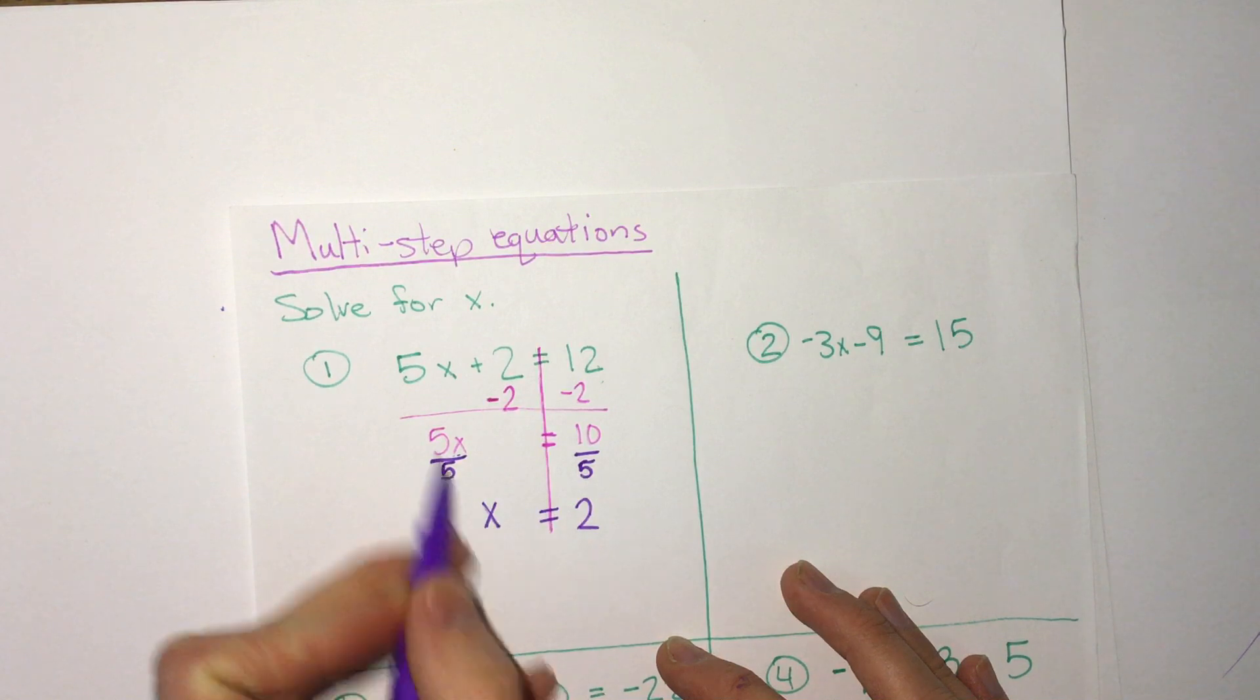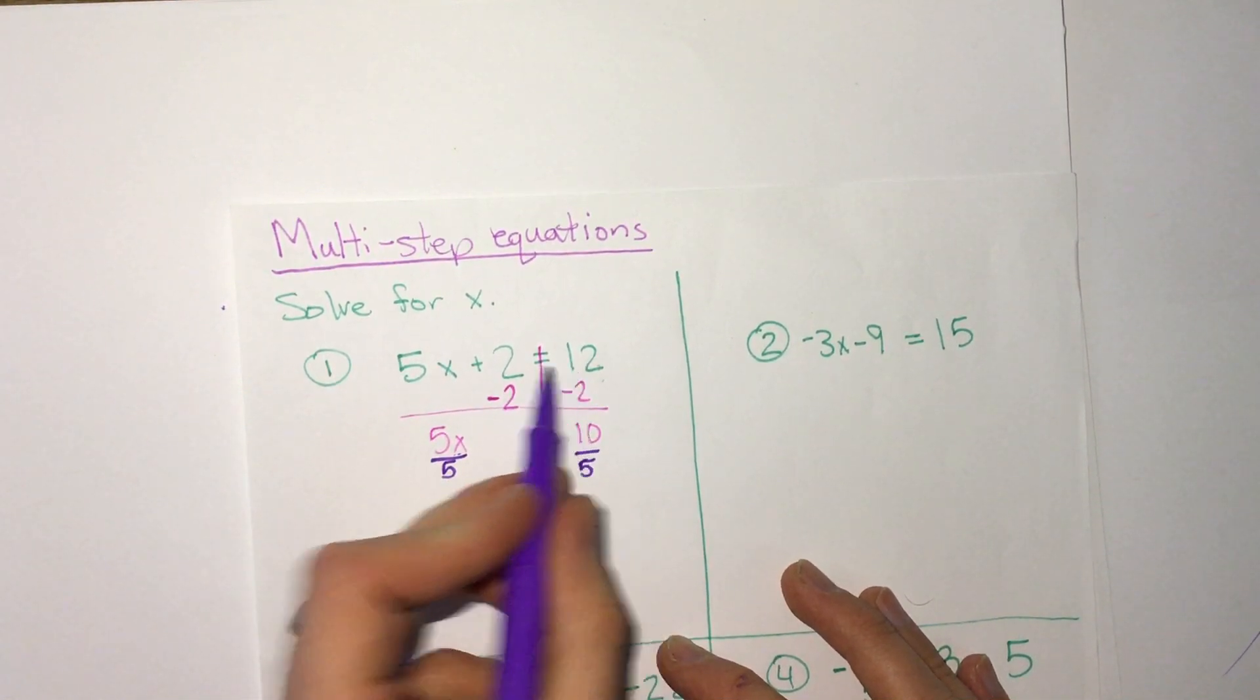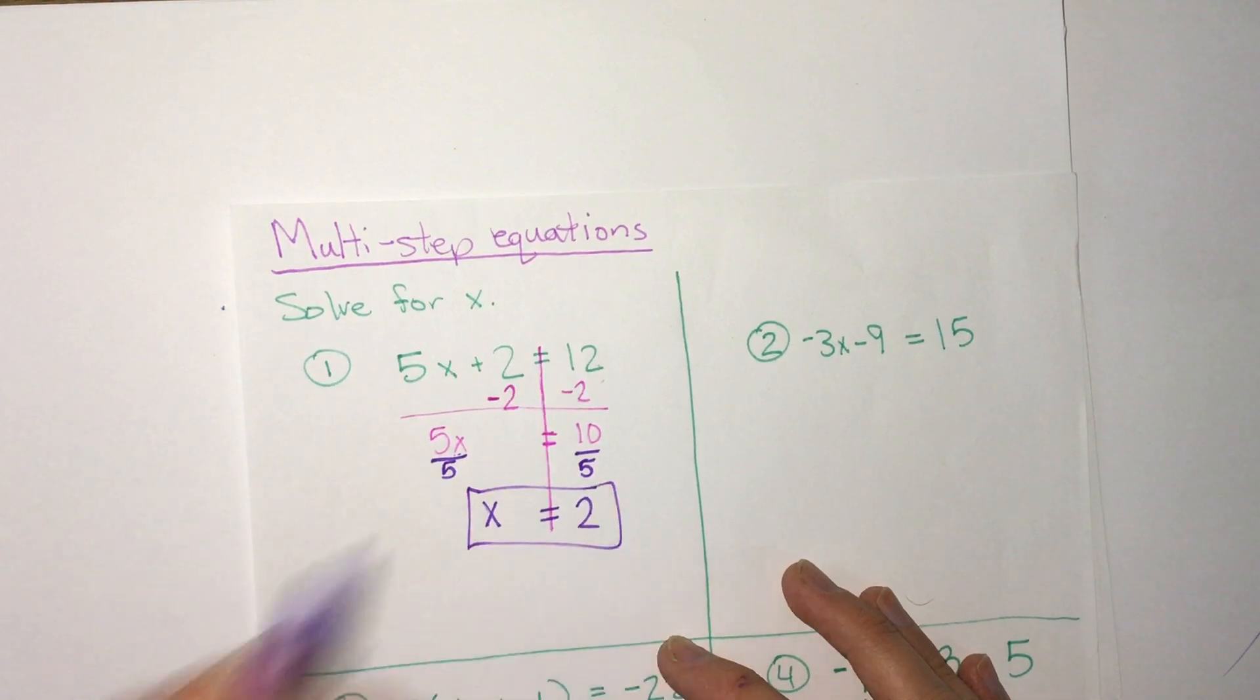And we can always check our answer. 5 times 2 is 10, plus 2 is 12, 12 equals 12 is correct, so this is our answer.